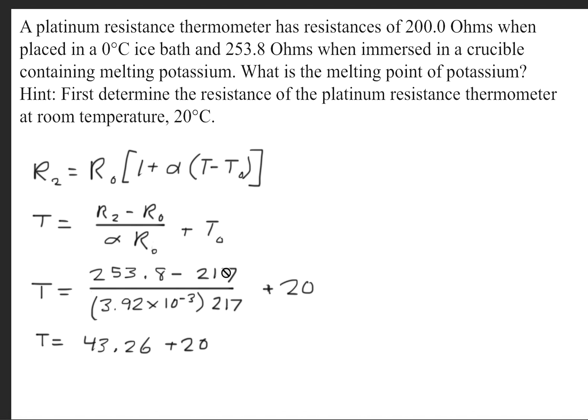So we'll plug in all the given information, and we get that this term right here will come out to be 43.26, and we'll add that on to 20. We get that the melting point temperature for potassium will be 63.26 degrees Celsius.